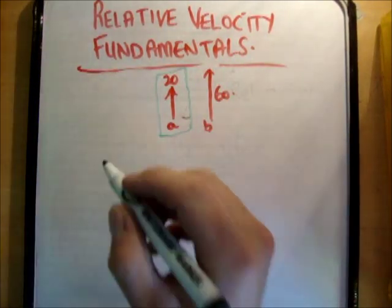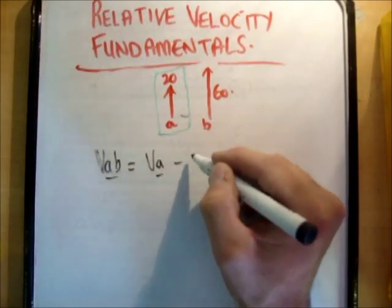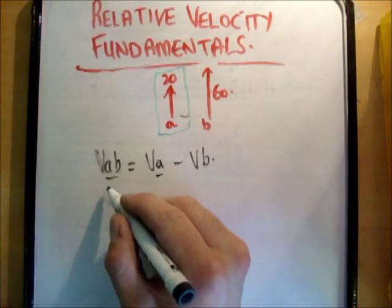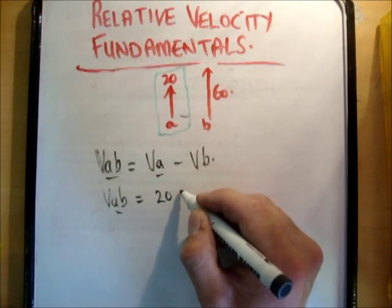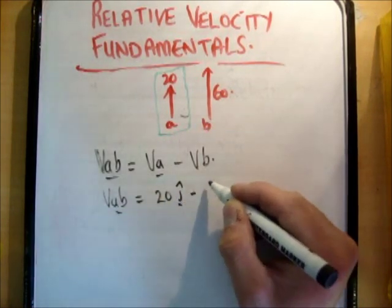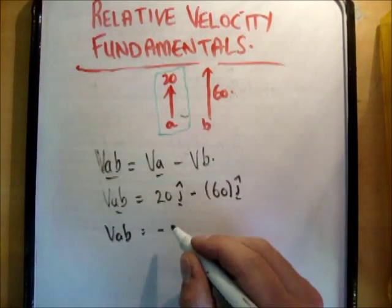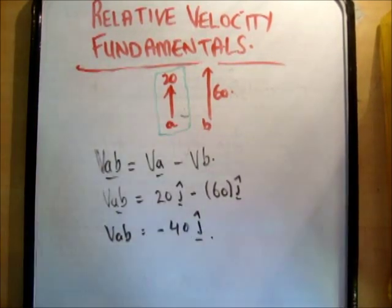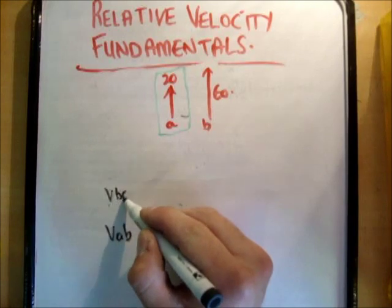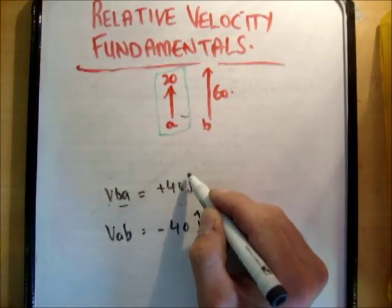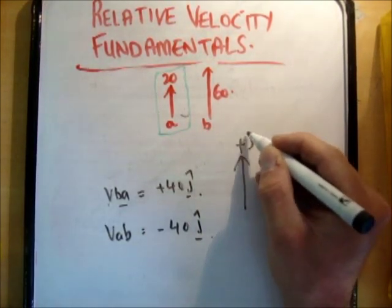So what is VAB in this case? VAB equals VA minus VB. Now these are vectors, so we have directions. VAB is equal to 20j-hat minus 60j-hat, so VAB is equal to negative 40j-hat. And our first result was VBA is equal to plus 40j-hat. Of course we're defining plus J as being in this direction.